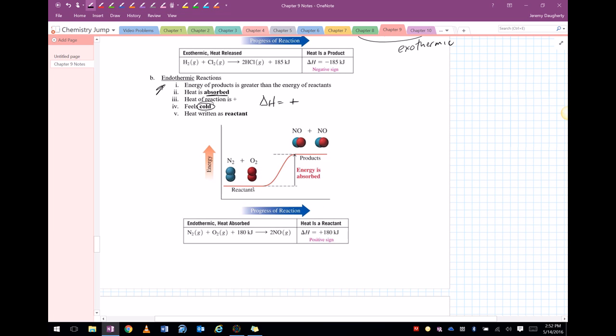So in this case, we start out low, we end up high. So if I take the products minus the reactants, we're going to have a big number minus a little number, which is going to give us a positive value.